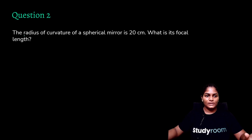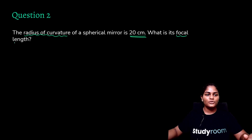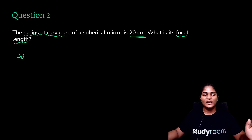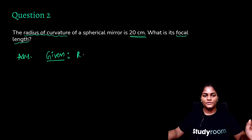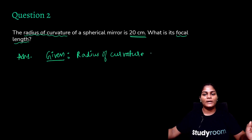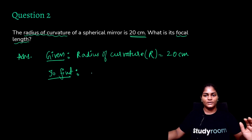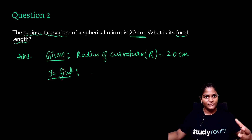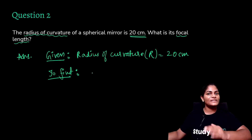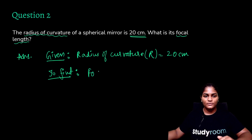The next question says the radius of curvature of a spherical mirror is 20 centimeters — what is its focal length? Whenever we get a numerical like this, we always write the things given to us. What is given: radius of curvature R = 20 cm. You should always write 'given' and 'to find' — it makes things very easy because all the information from the question is right in front of you. We have to find the focal length, small f.